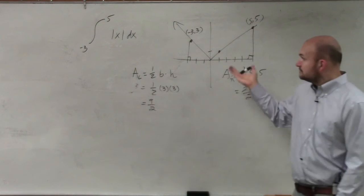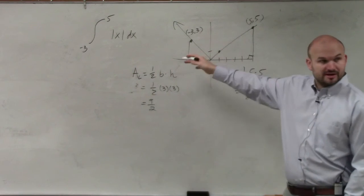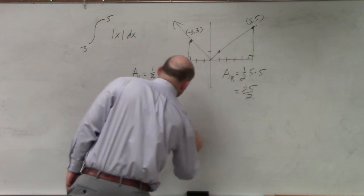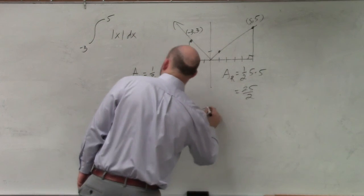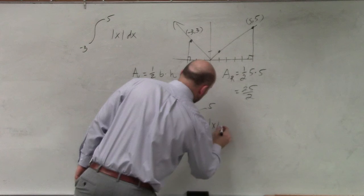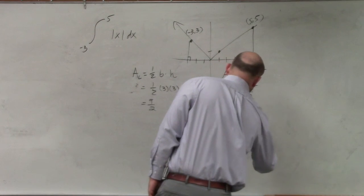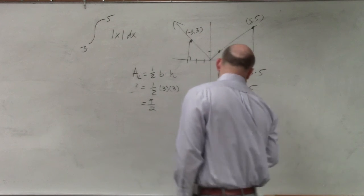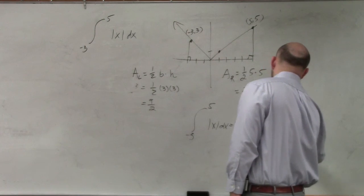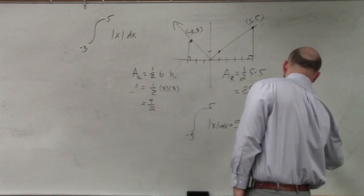So now you can see these are two separate areas. Therefore, to find my definite integral from negative three to five of absolute value of x dx, is going to equal nine-halves plus 25-halves, which is 34-halves, which equals 17.